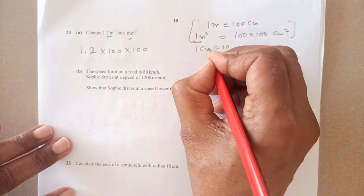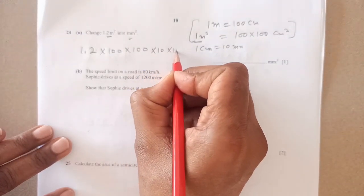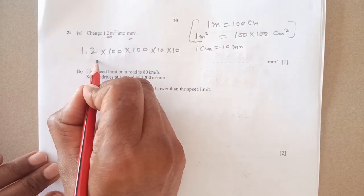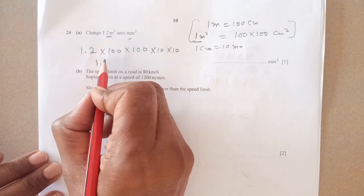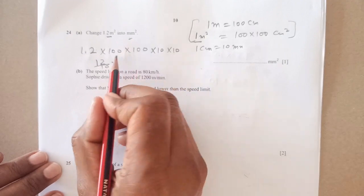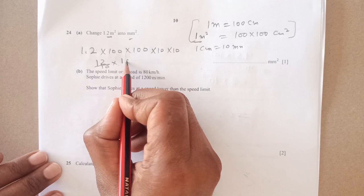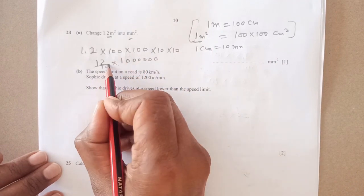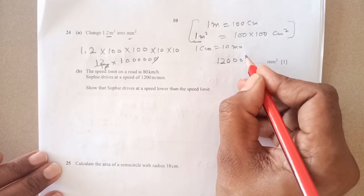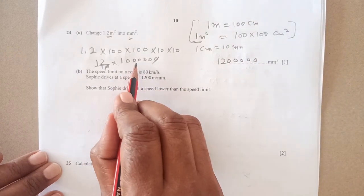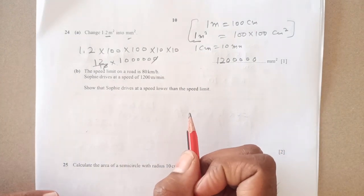From centimeter to millimeter: 1 centimeter equals 10 millimeters, so times 10 times 10. This gives us 1.2 with 1, 2, 3, 4, 5, 6 zeros. We have 1,200,000 millimeters squared. That's it.